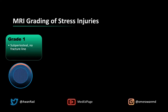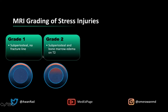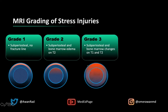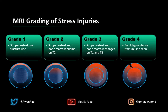Grade one is when you have subperiosteal edema but no fracture line — the outer cortex shows the red area of subperiosteal edema on T2, but no fracture. Grade two is when you have subperiosteal edema plus bone marrow edema on T2, but again no fracture line visible on MRI. Grade three is when you have both subperiosteal edema and bone marrow edema visible on both T2 and T1-weighted images. Grade four is when you have a frank dark fracture line — a break of the cortex into the marrow space — which is automatically a grade four stress injury.